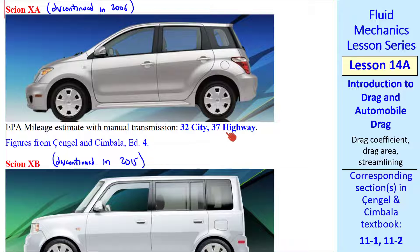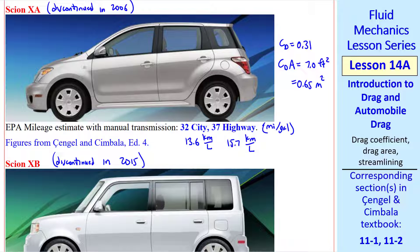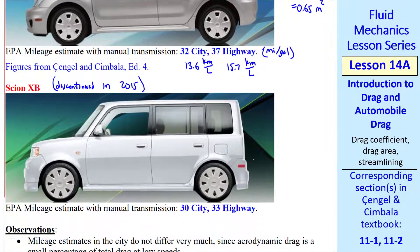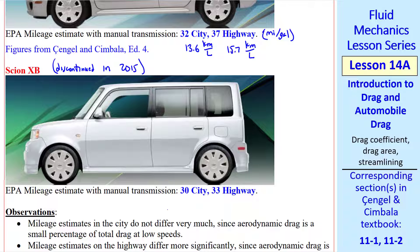Here are the EPA mileage estimates in miles per gallon, which I convert to kilometers per liter. The drag coefficient was 0.31, and the drag area was 7.0 square feet, or 0.65 square meters. The XB was much more boxy looking, so we're not surprised that its mileage numbers are worse.